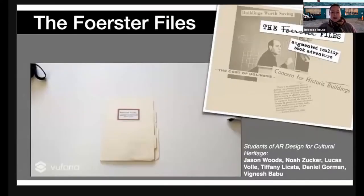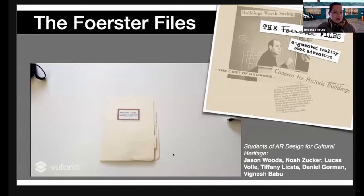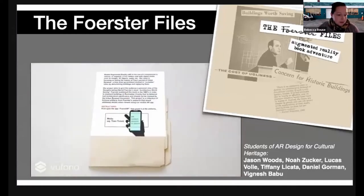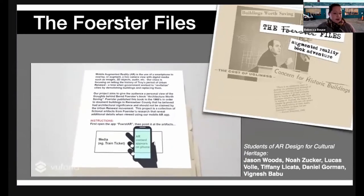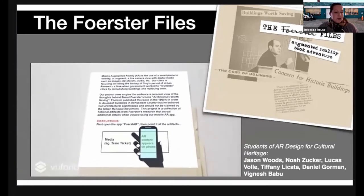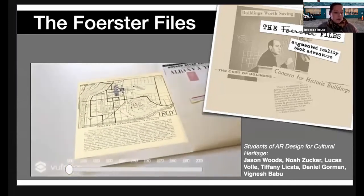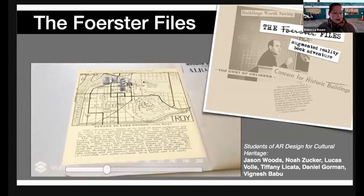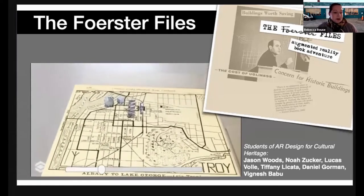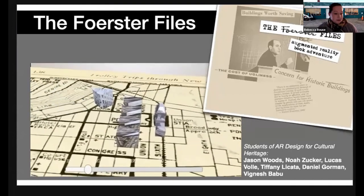They came up with the idea of a fictionalized 'lost file' — a lost file of Bern Forrester's that uses all kinds of archival film, audio, and object reproductions plus an interactive map to tell the story of urban renewal in Troy. The demo video shows the view through a phone screen — you can see both the physical file and the digital overlays that appear. An interactive slider lets you see when buildings rise and fall in Troy on this map, and those 3D models are textured with archival images of those buildings.